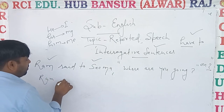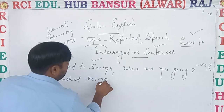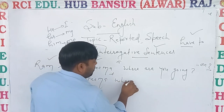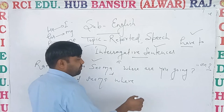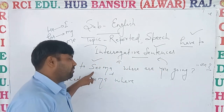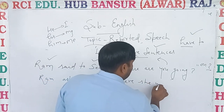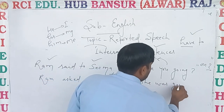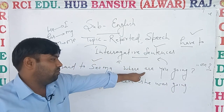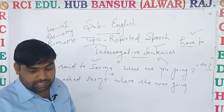Ram asked Sima — to remove commas, a WH-word is there. 'You' is the second person, so according to Sima change it. Then Sima will use 'she'. Because 'is' is present and outside is past, then change to 'was'.